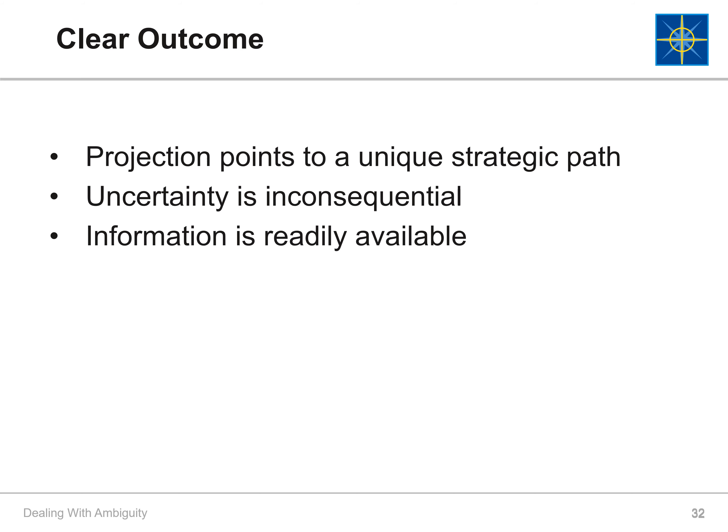At level one, clear outcome, organizations are able to simply predict a single future outcome on the basis of what they can define. These projections point towards a unique strategic path and the level of uncertainty is negligible. Information is readily available and able to be used for making future business decisions.